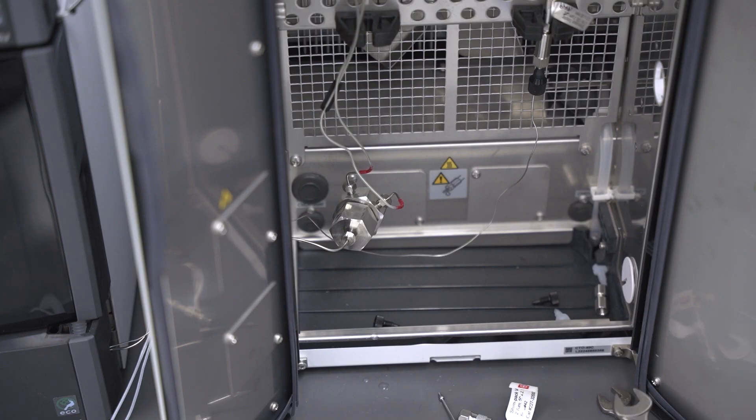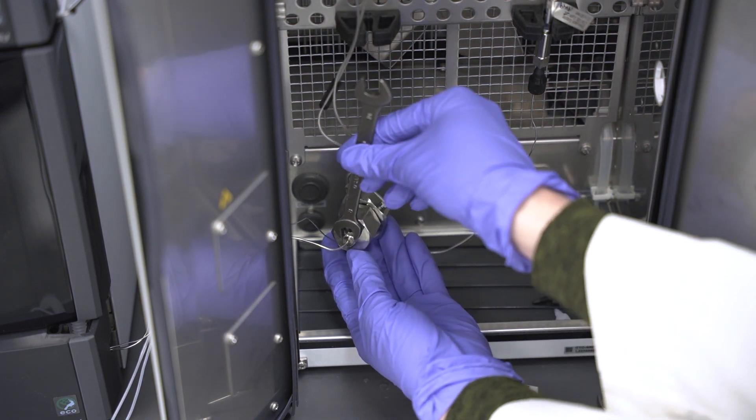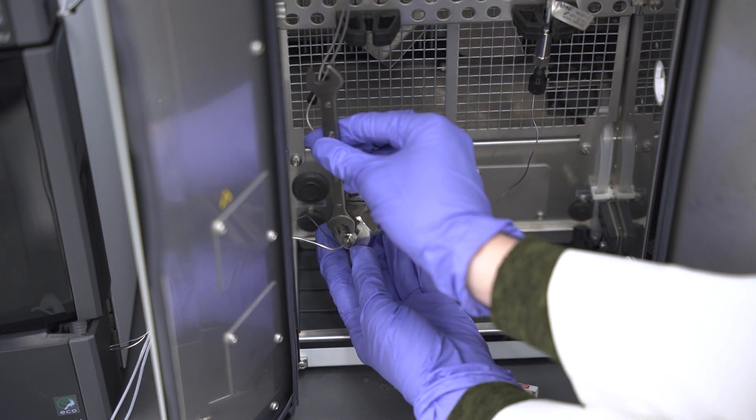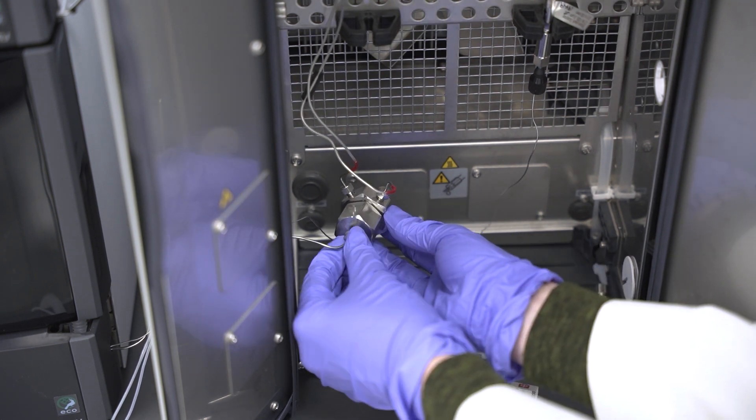Start by disconnecting the out flowing tube from the mixer or mixer out. Make sure to keep this tubing connected to the high pressure valve of the auto sampler.